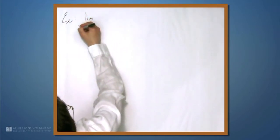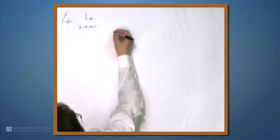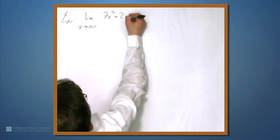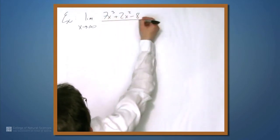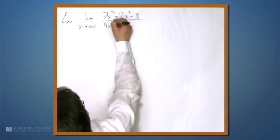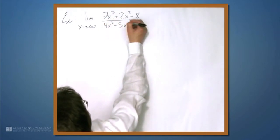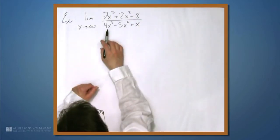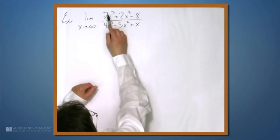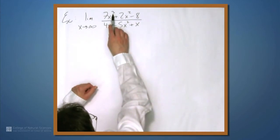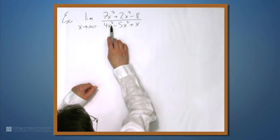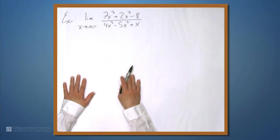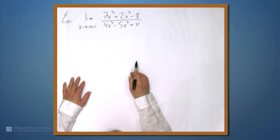Limit as x approaches infinity of 7x cubed plus 2x squared minus 8, all over 4x cubed minus 5x squared plus x. So we know how to deal with these things without L'Hopital's rule. And we know that when the polynomial degrees are the same, so here we have 3 and 3, then the limit as x approaches infinity is just the ratio of the leading coefficient. So we know the answer that we're looking for. But it's always good to know multiple ways of doing things.